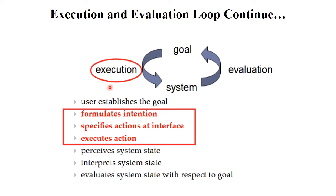The second step is execution. If you have a particular goal or aim, the second step is execution — how to execute or fulfill your goal. Execution involves three steps: formulate intentions, specify action, and execute action. You perform different tasks for completing those goals. This is also called 'execute actions.'